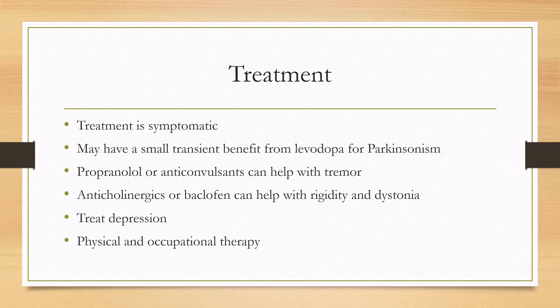For treatment, unfortunately there is no disease-modifying agent, so treatment is still symptomatic. Typically patients will not really benefit from levodopa for parkinsonism, but there may be a small, transient benefit in a minority of patients. For tremor, you can try propranolol or anticonvulsants. For rigidity and dystonia, you can try anticholinergics or baclofen.